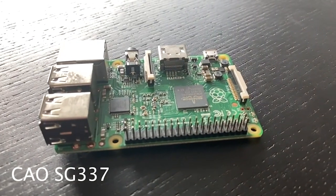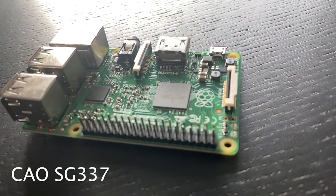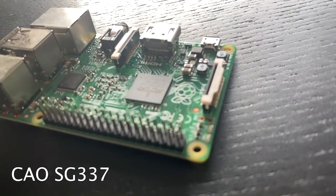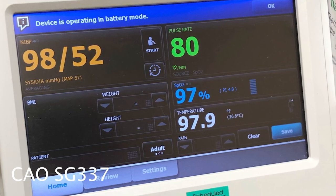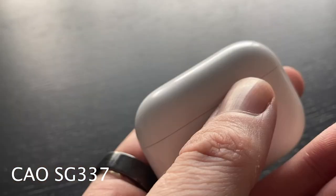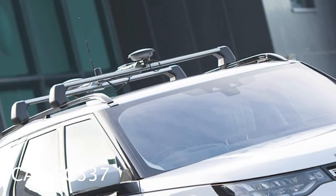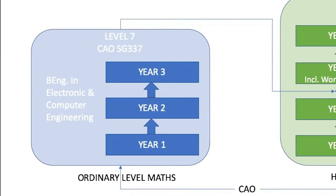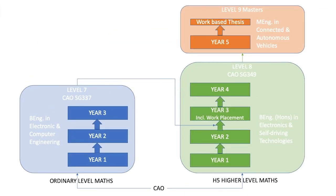If you are interested in technology or engineering, but are not doing higher level maths, why not consider our level 7 in electronic and computer engineering? This is a three year program that looks at the design and development of embedded electronic systems. These are the medical devices that keeps us healthy, the consumer devices that keeps us entertained, or the controlled systems that keeps us safe on the road. You can then progress on to the level 8 in electronics and self-driving technologies, and from there to the masters. Check out the link below for more information.